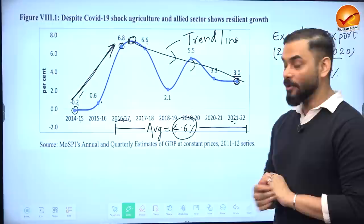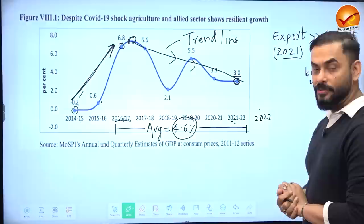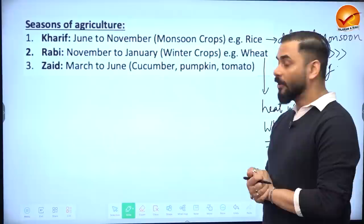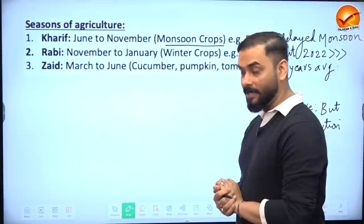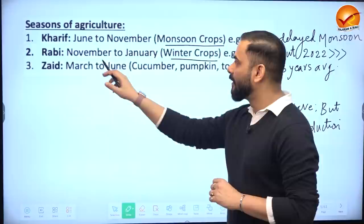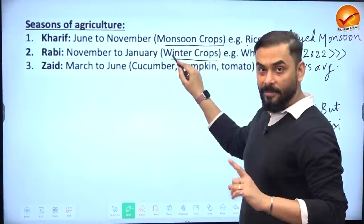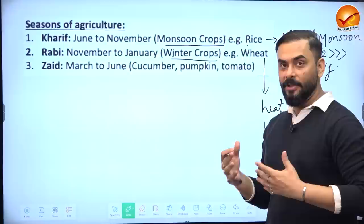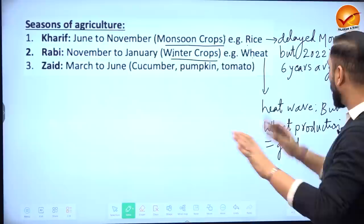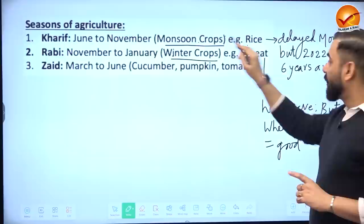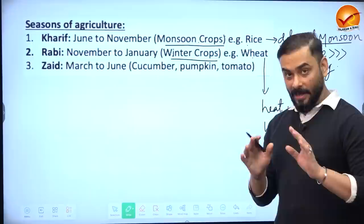One thing missing in the economic survey is the agricultural growth rate data for 2022 — they stopped at 2021. Regarding agricultural seasons: Kharif runs June to November (monsoon), Rabi runs November to January (winter), and Zaid runs March to June. Kharif mainly grows rice; Rabi mainly grows wheat; Zaid grows watery crops like cucumber, pumpkin, and tomatoes. This year there was a delayed monsoon which should have impacted rice.